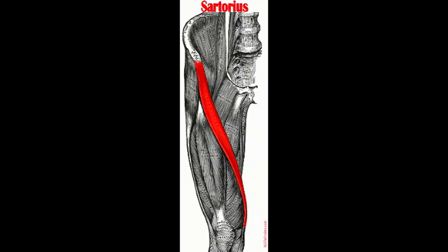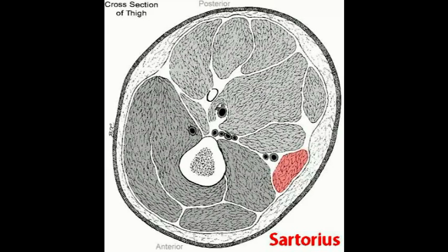The sartorius muscle arises by tendinous fibers from the anterior superior iliac spine, running obliquely across the upper and anterior part of the thigh in an inferomedial direction. It descends as far as the medial side of the knee, passing behind the medial condyle of the femur to end in a tendon.